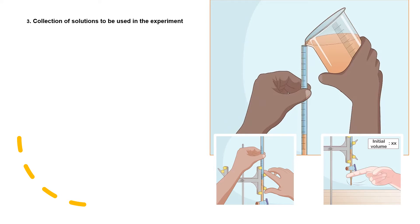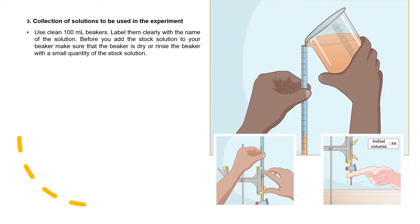Collection of solution to be used in experiment. Use clean 100 ml beakers, which you must label them clearly with name of the solution so that you don't mix it up with other solutions. Before you add the stock solution to your beaker, make sure that beaker is dry or rinse the beaker with small quantity of stock solution. Never pour excess solution back into the stock bottle. You are going to mess with the concentration of it.